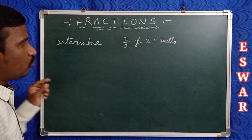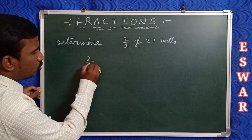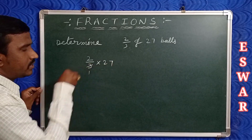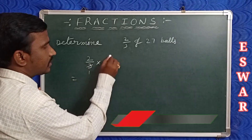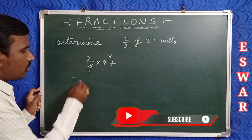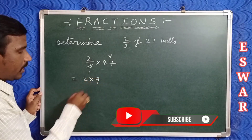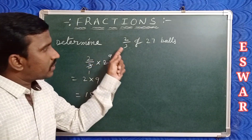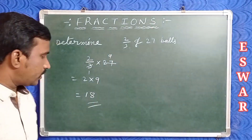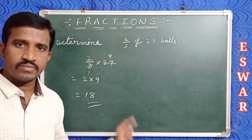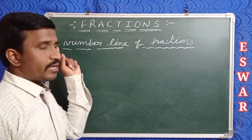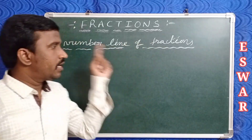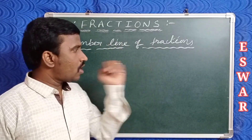Now another example: two by three of 27. Two by three of 27 means two by three multiplied by 27. Nine threes are twenty-seven, so cancel: two times nine is 18. Therefore two by three of 27 balls means 18 balls.